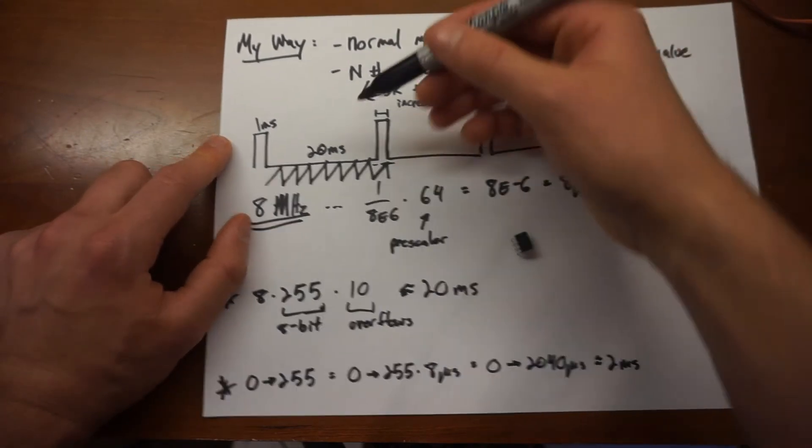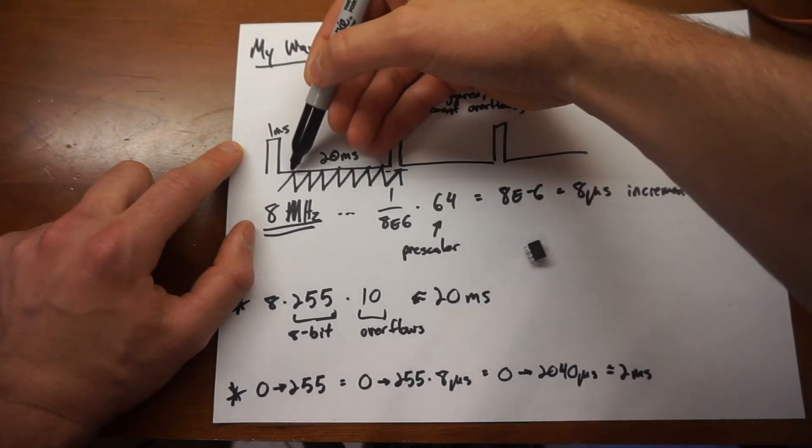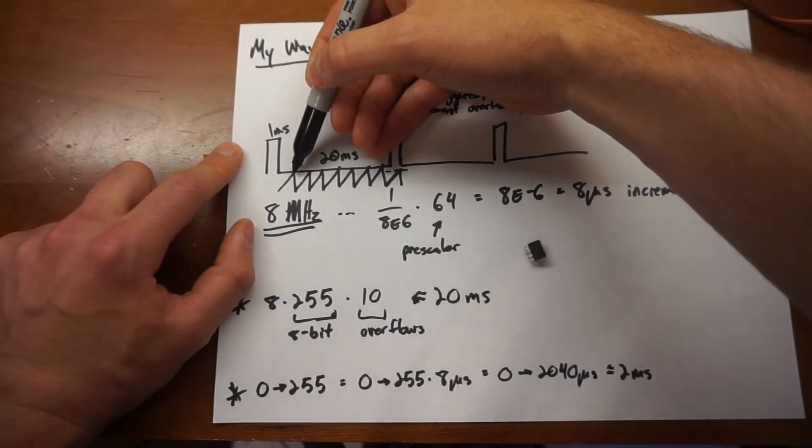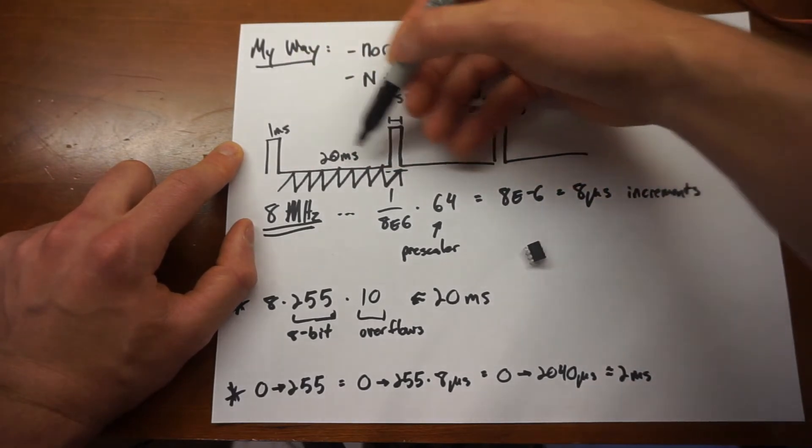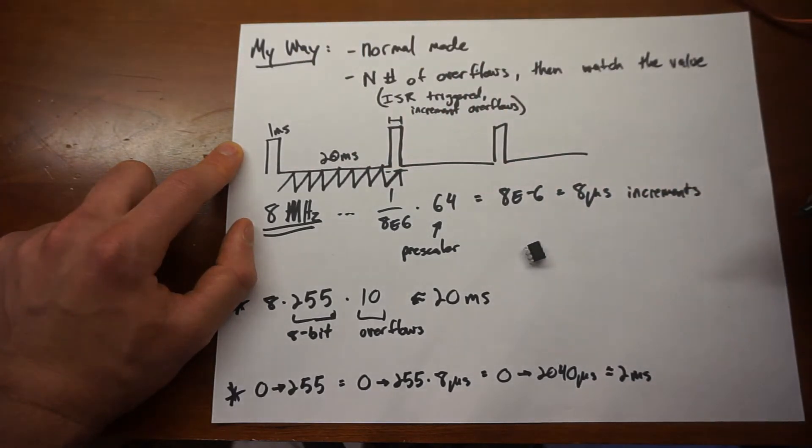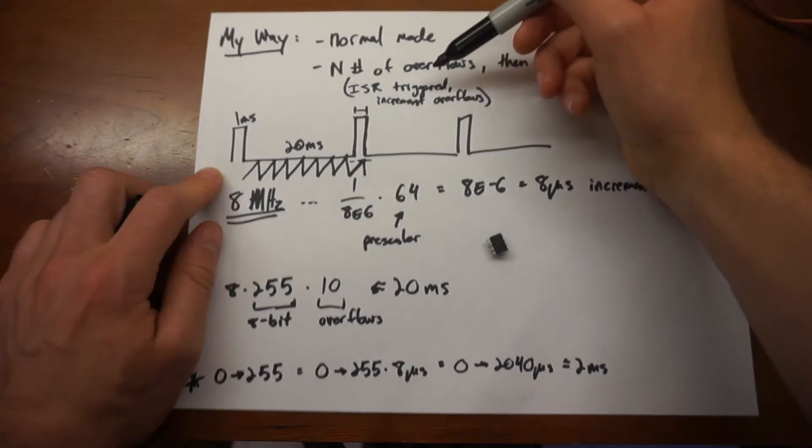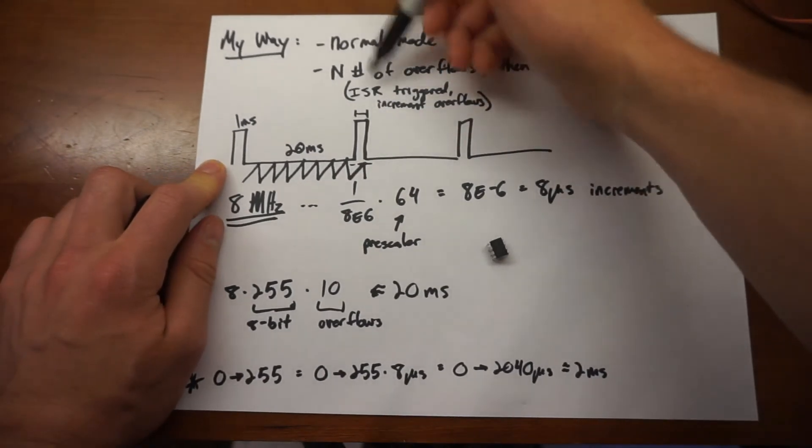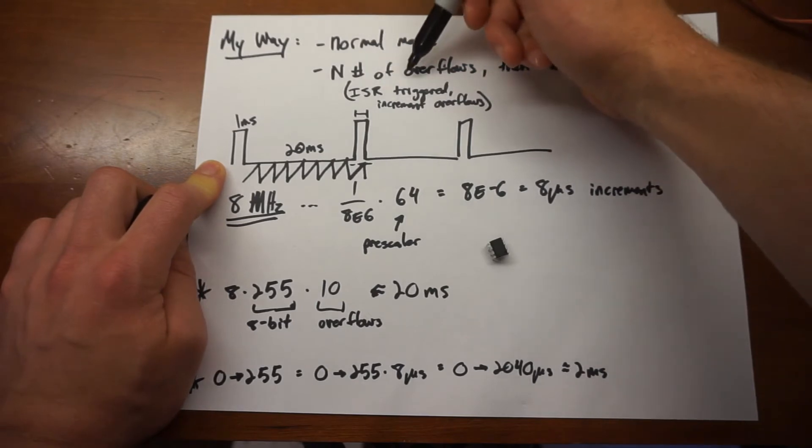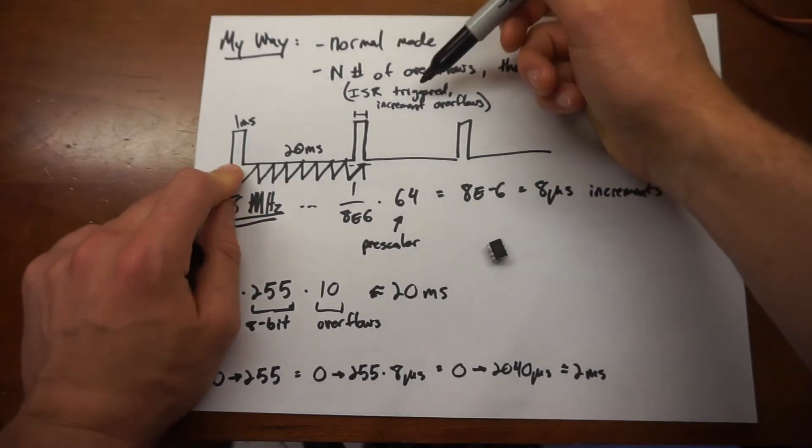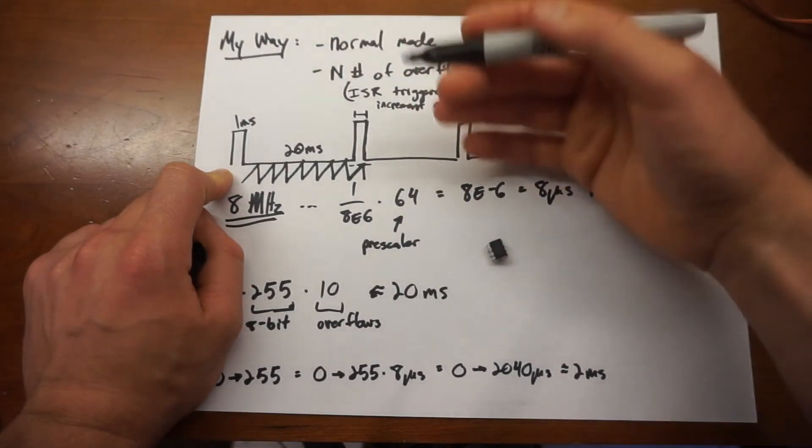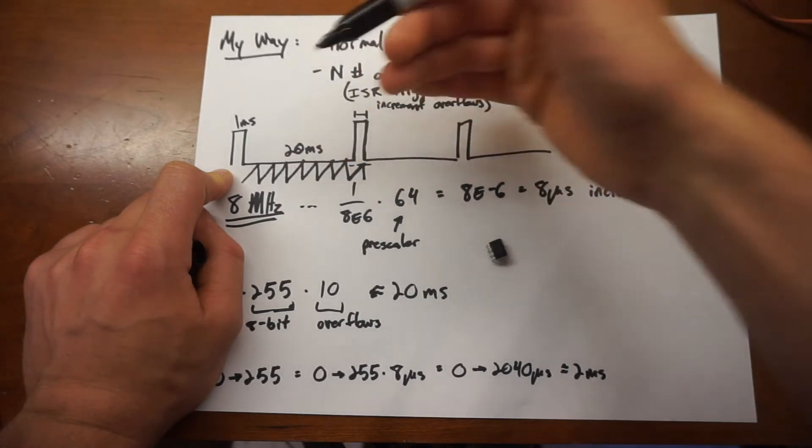So that means that each one of these overflows is 2 milliseconds, approximately, and so then we need 10 of those guys, we need 10 overflows to get us the 20 millisecond period we want. So a good timing of this is enabled by the use of an ISR, or Interrupt Service Routine. And what that is, is when we can attach an interrupt to the overflowing, to the actual physical overflowing of the timer.